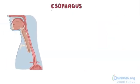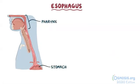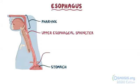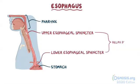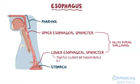The esophagus is a long tube going from the pharynx to the stomach, and it's connected to the pharynx through the upper esophageal sphincter, and to the stomach through the lower esophageal sphincter. Both relax during swallowing to allow the passage of foods or liquids. Additionally, the lower esophageal sphincter is tightly closed between meals to prevent acid reflux.